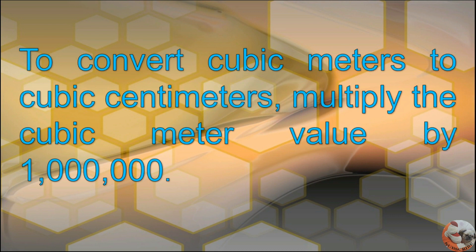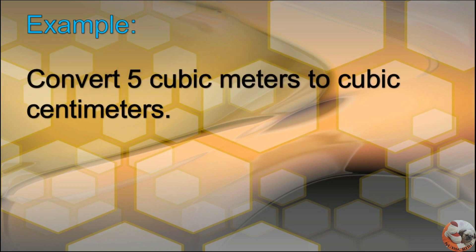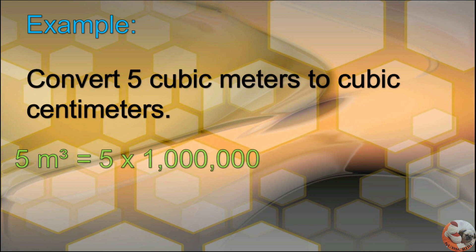To convert cubic meters to cubic centimeters, multiply the cubic meter value by 1,000,000. Example: convert 5 cubic meters to cubic centimeters. Multiply 5 by 1,000,000 to get 5,000,000 cubic centimeters. Therefore, 5 cubic meters is equal to 5 million cubic centimeters.